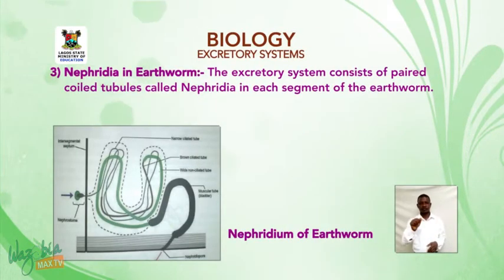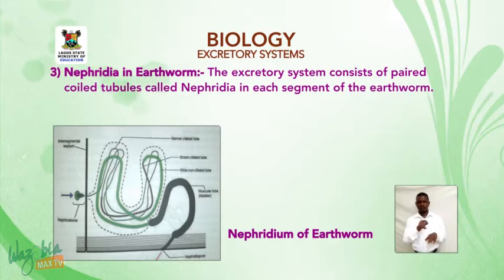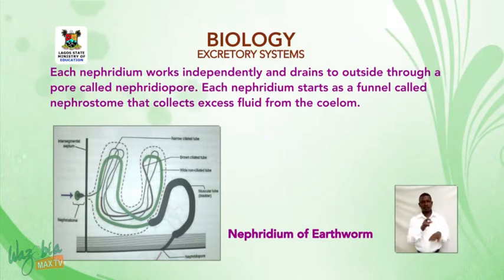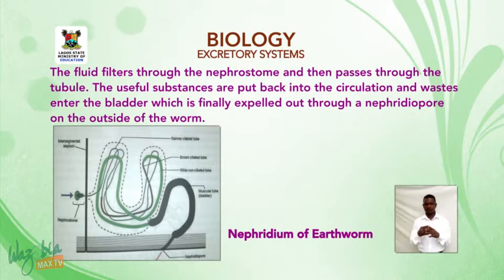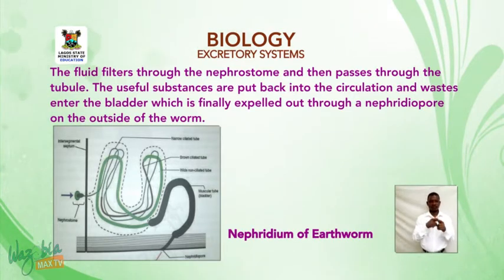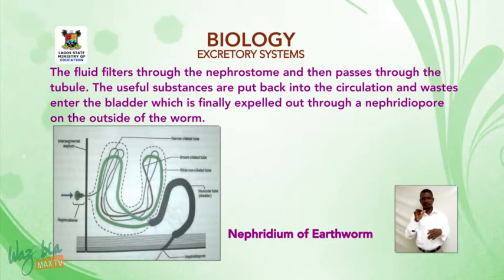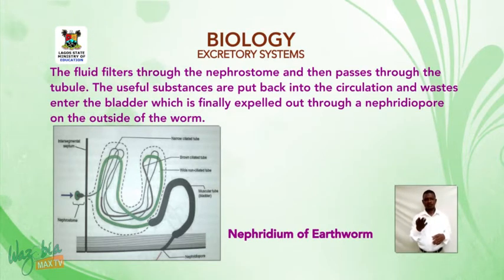The excretory system of the earthworm consists of paired coiled tubules called nephridia in each segment. Each nephridium works independently and drains to the outside through a nephridium pore. Each nephridium starts as a funnel called the nephrostome that collects excess fluid. The fluid filters through the nephrostome and passes through the tubule; useful substances are reabsorbed into circulation, and wastes enter the bladder and are expelled through the nephridium pore.